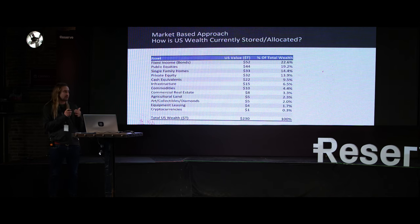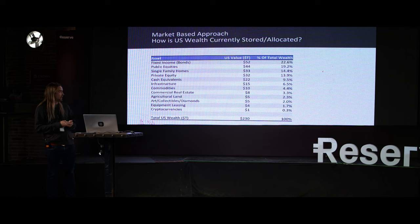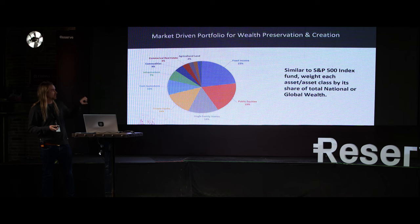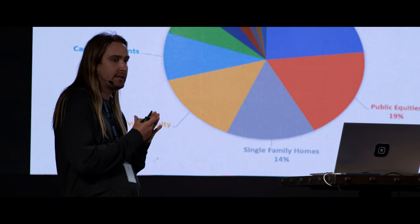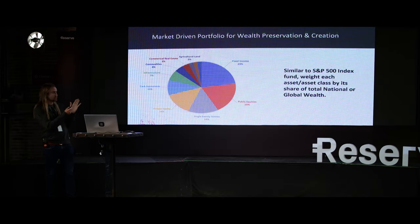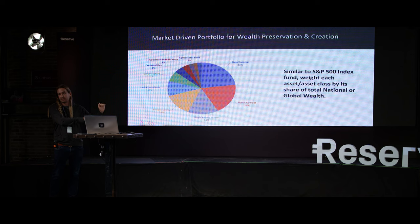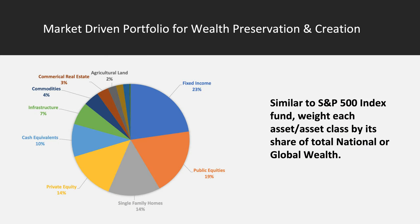Any R token based on real assets will be some combination of these major asset classes. My hypothesis for what would back the asset-backed dollar is simply a portfolio like an S&P 500 index fund but for all assets and all asset classes. You take fixed income or debt — 23% of global wealth is currently stored there — and that becomes your current allocation in the basket. So what this would currently look like is about 23% fixed income, 19% equities, 14% single family homes, 14% private equity, 10% cash equivalents, 7% infrastructure, and 4% commodities.